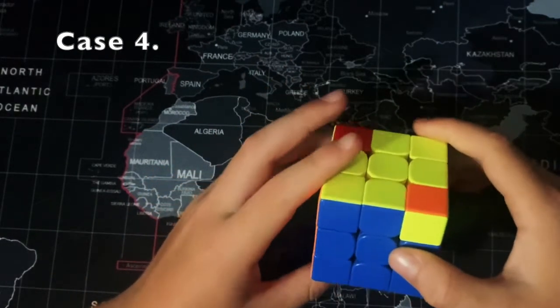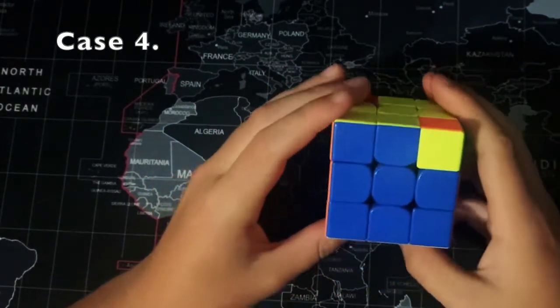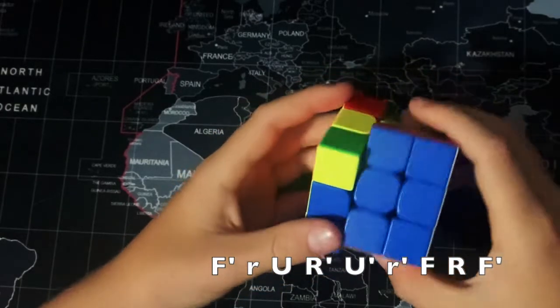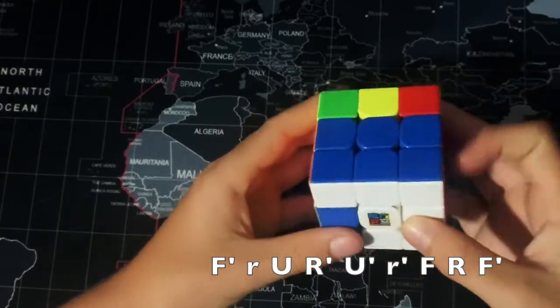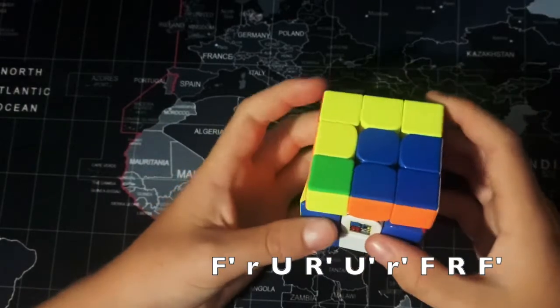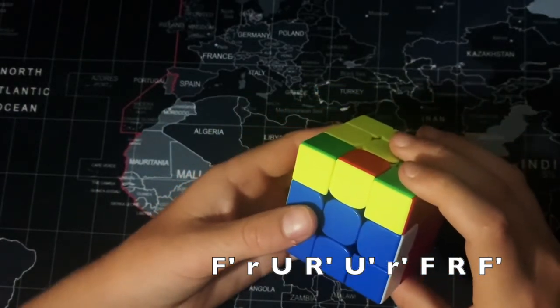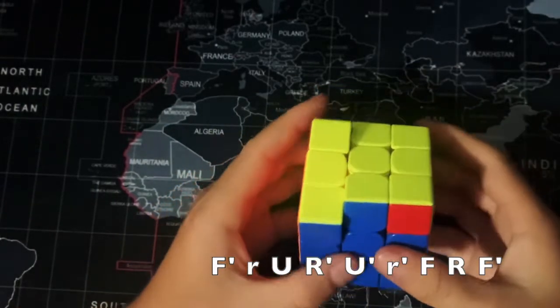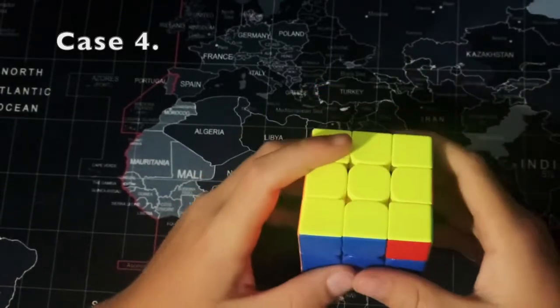But now this time you add F' on the front, so it's F', lowercase r, U', R', U', lowercase r down, F, R. And then there you go, guys.